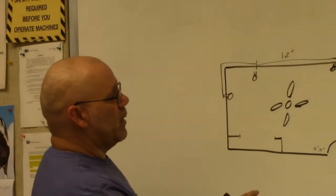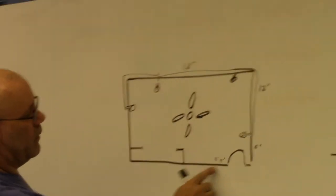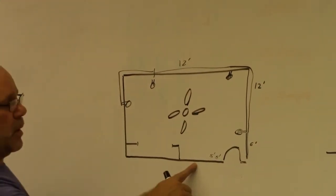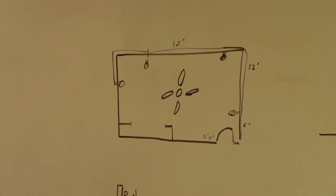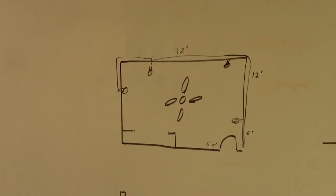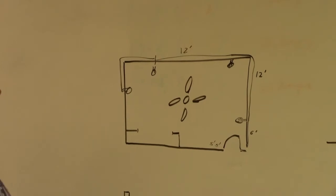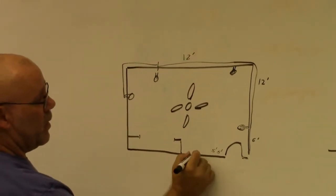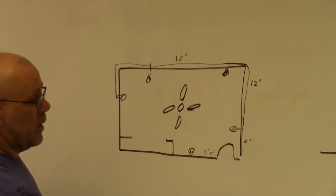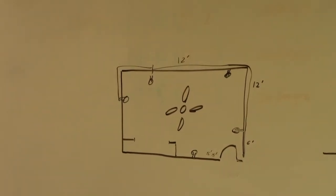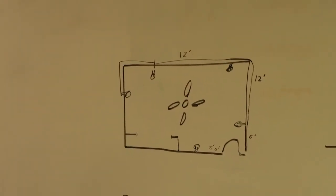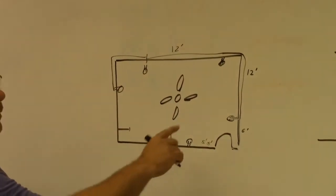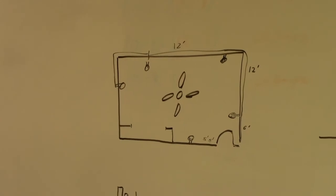Now that leaves this wall right here. If this wall is more than two feet, it has to have an outlet. So this wall is going to need an outlet. So now I have all my outlets identified, where approximately I'm going to put them.